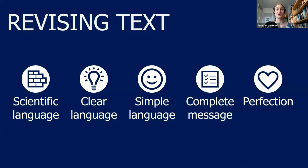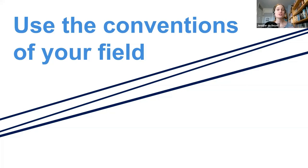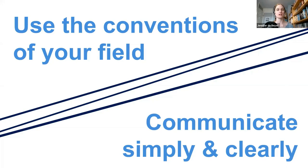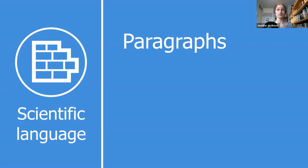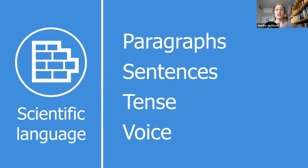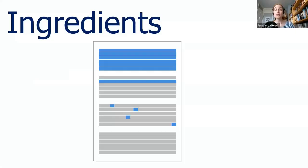We're going to talk about five stages of revision. First, we'll discuss the expectations of scientific language — those building blocks. As a caveat, we do need to use the conventions of our field and fit into the academic discourse. But that doesn't mean we can't communicate simply and clearly. We'll cover four basic building blocks: paragraphs, sentences, tenses, and voice.